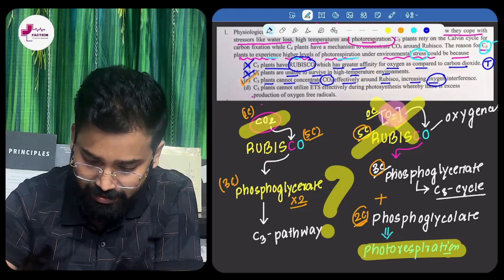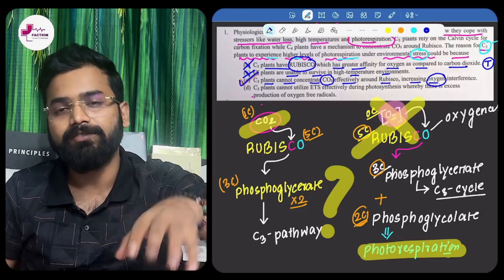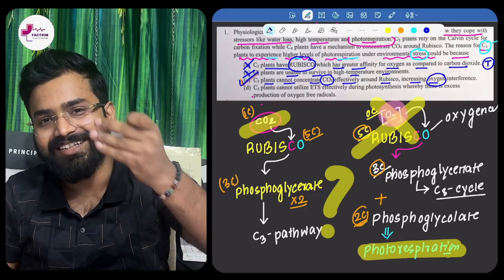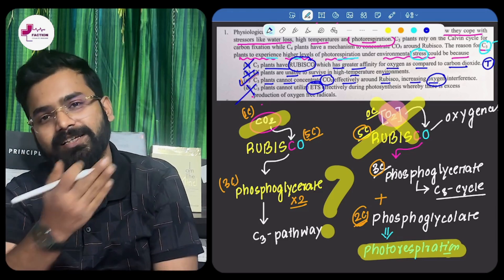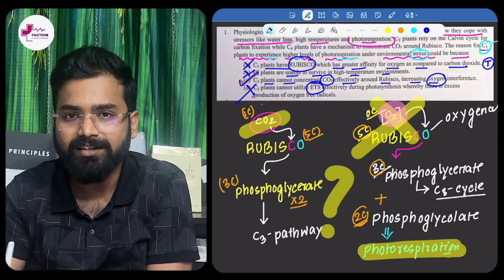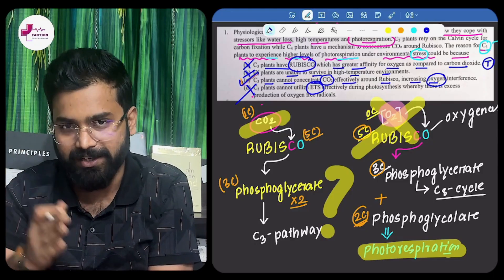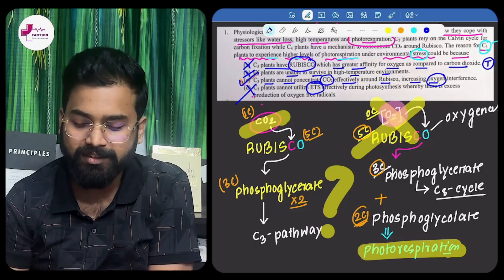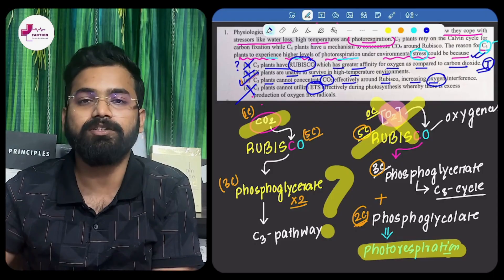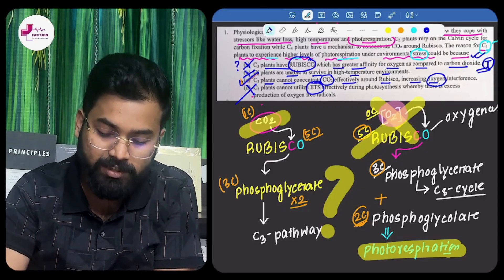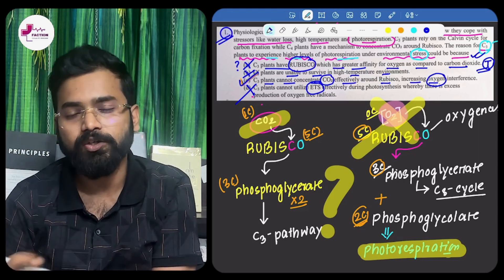Whoever wrote this paper did a tremendous job on this first question, because the trap in option A had a true statement that didn't actually answer the question. Option D involves the electron transport system, which has nothing to do with photorespiration — ETS belongs to the light phase, while photorespiration is a dark phase process. So option D is eliminated. The answer is option C. The trap was option A. This was my view on the first question, and I'll be coming with more NEET questions in short video formats. Thank you!